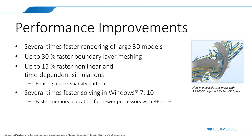We also have new faster boundary layer meshing and faster non-linear and time-dependent simulations, which is important for CFD. From a technical perspective, this is thanks to the solver reusing the matrix sparsity pattern between iterations. And there's great news for Windows users running on high-performance computers with more than eight cores — maybe 16 cores or more. Thanks to a new memory allocation method, you can get several times faster solving on such platforms. Mac and Linux already had good performance; now Windows has it too.